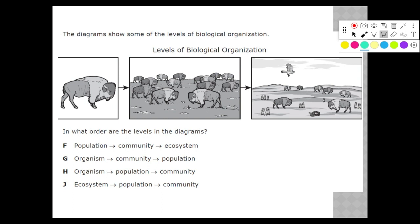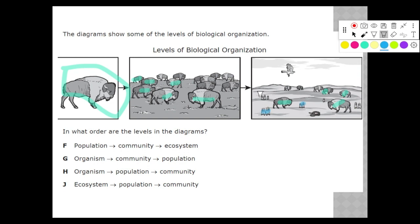A diagram showing levels of biological organization might show one individual organism first, then a group of the same organism like buffalo, and then multiple different types of organisms — gophers, a snake, an eagle — representing a community. The question would ask you to identify what order those levels of organization appear in the diagram.